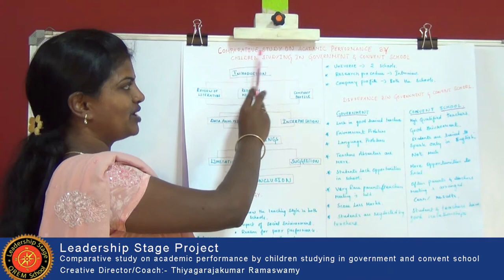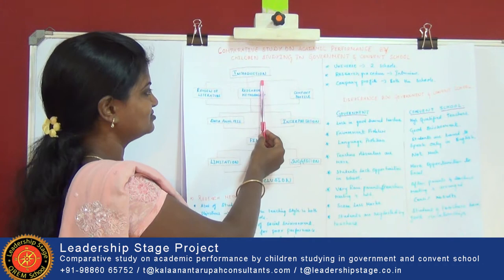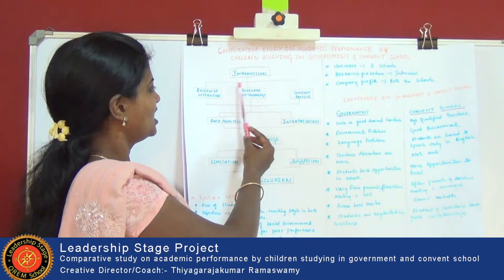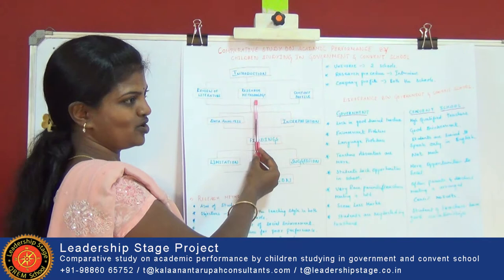Hi, I am Kamal. My research topic is a comparative study on academic performance by children studying in government and private schools. I have done it for children. It's like an introduction. First I have gone through what education is and then my views, and later I have taken a review of literature from other sources — what the authors say about education and for the children.